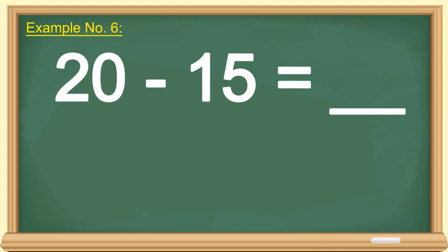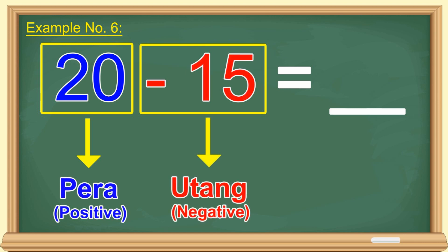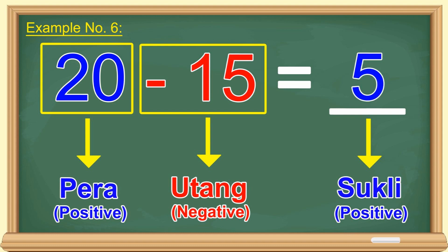Usapang minus naman tayo. 20 minus 15 is equal to blank. Paghiwalayin natin ito. Pag-usapang minus na, sumasama lagi ang minus sa next number. At dahil diyan, meron na tayong 20 at negative 15. Ang 20, pera o utang? Pera. Eh, ang negative 15, pera o utang? Utang. Pag binayaran mo na ang utang mo, anong matitira? Utang o sukli? Sukli. At magkano ang sukli mo? 5 pesos. At dahil sukli yun, positive 5 yun.